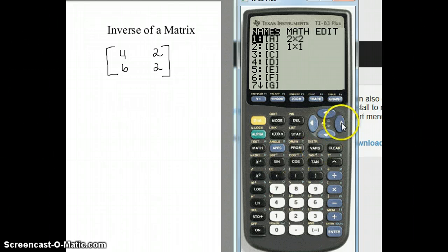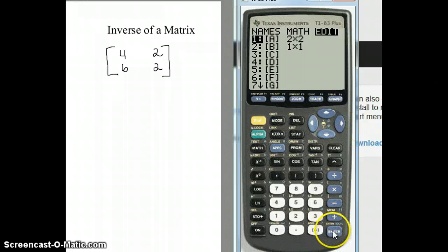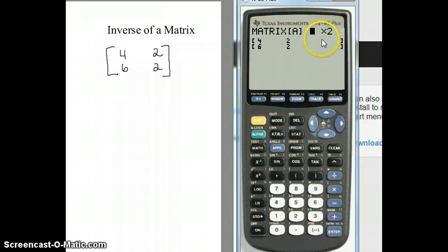But I will show you I've already entered this matrix. If we go to edit and we hit enter on A, you can see it's a two by two matrix and I have it entered there: 4, 2, 6, 2.